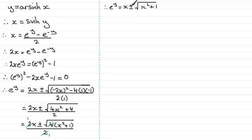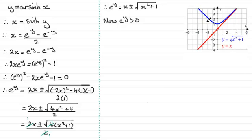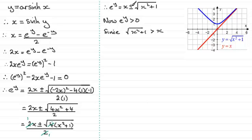Now we have this plus or minus option, but e to the power y must always be a positive quantity. Comparing x with the square root of x squared plus 1, we can see from the graph that the square root of x squared plus 1 is always greater than x. So since the root of x squared plus 1 is greater than x, the negative option would give a negative value for e to the power y, which is not defined. We must take the positive option, so e to the power y equals x plus the square root of x squared plus 1.